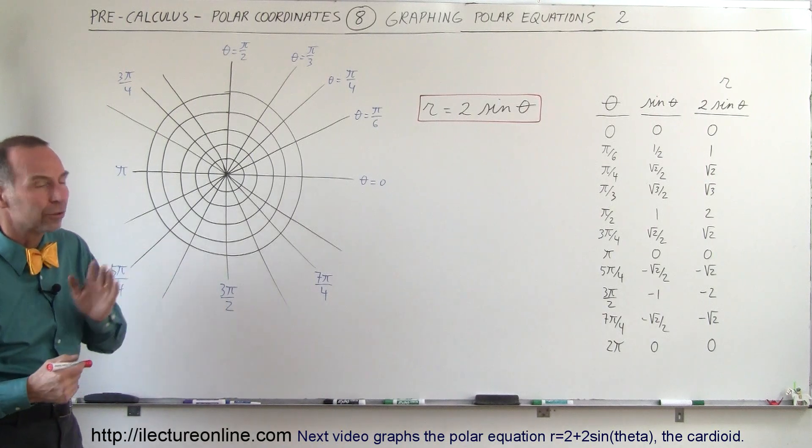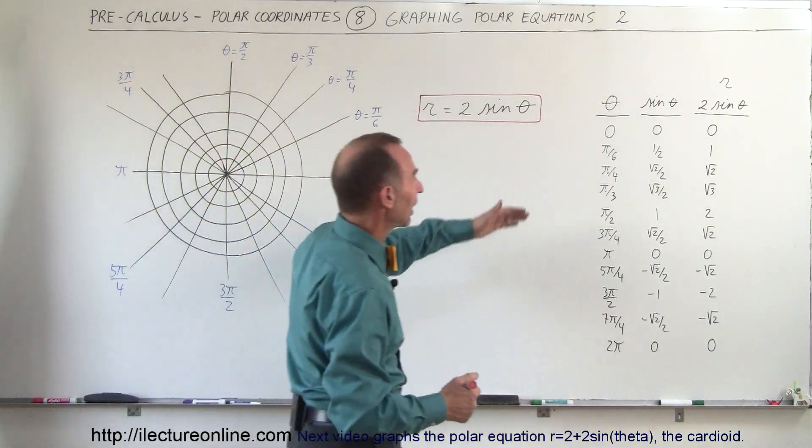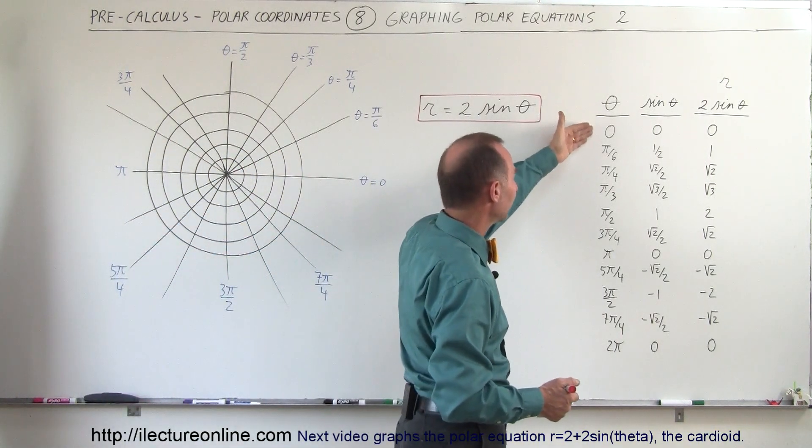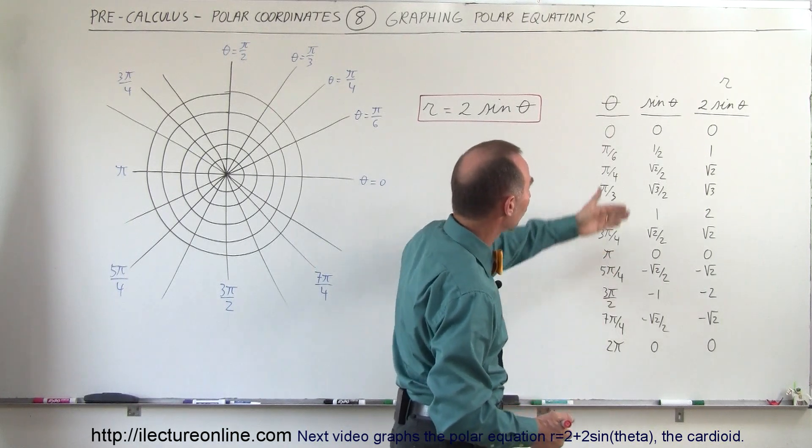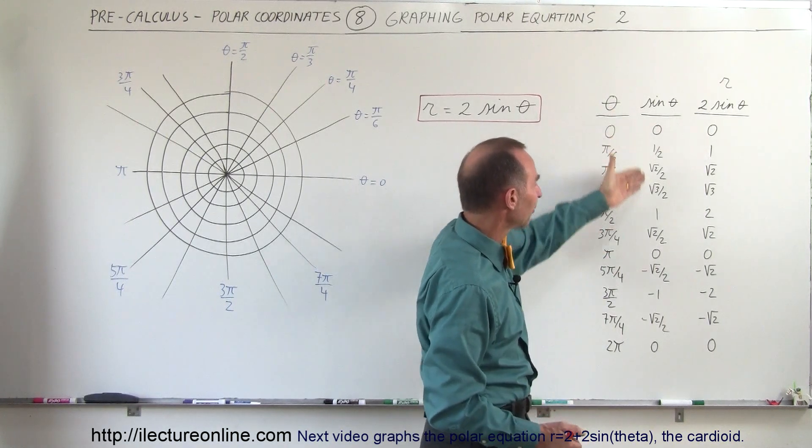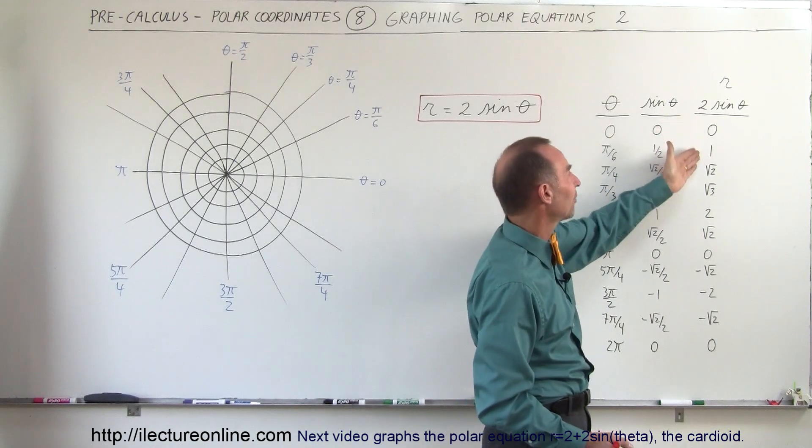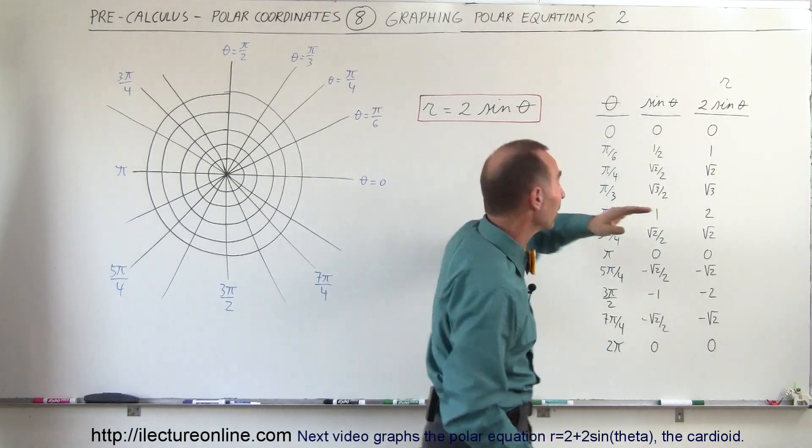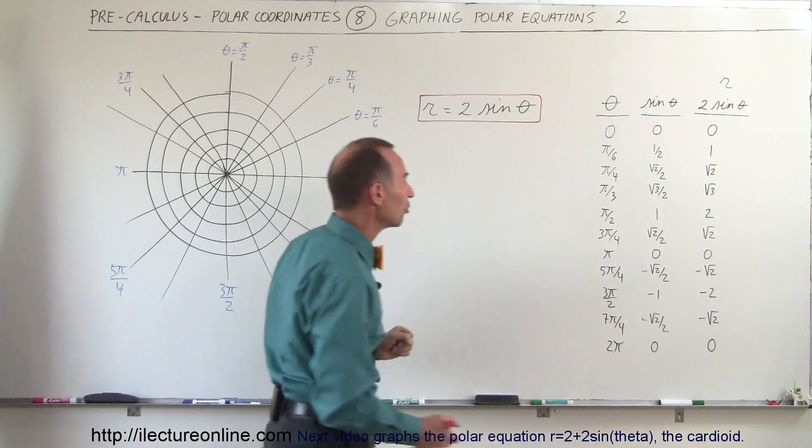So what does that look like? To help us out, I have a table of values here. We have the angle theta from 0 all the way to 2π, the corresponding value for sine of theta, and then the corresponding value for 2 times sine of theta, which is the value for r on the left side of the equation.